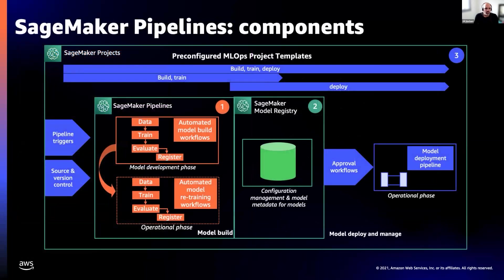To sum it all up: on the left you have any triggers for running a pipeline or changes to source control. Then the pipeline runs — doing data processing, training, and evaluating — and that same pipeline can run in both development and operational phases. Once you have a good enough model, the data scientist deposits it into the model registry, and from there, through an approval workflow involving different personas like an ops person and the data scientist, it gets deployed into the different deployment targets — all managed on SageMaker Projects.